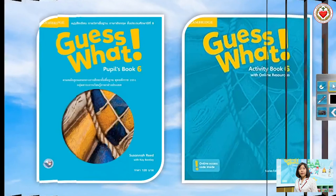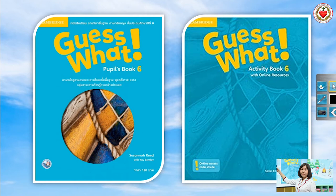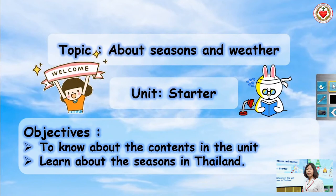Before learning today, I would like to introduce the book that we use in this class. Guess What? Level 6. The first is Pupils Book and Activity Book. Let's get started listening today. I'd like to talk about the first topic in the book: Seasons and weather.